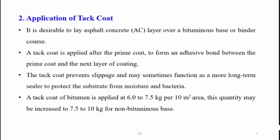The second step is application of tack coat. It is usually desirable to lay an asphalt concrete layer over a bituminous base or binder course. The tack coat is applied over the prime coat so that an adhesive bond is formed between the prime coat and the next layer. The tack coat prevents slippage and also functions as a long-term sealer to protect the substrata from moisture and bacteria. The base coat of bitumen is applied at a rate of 6 to 7.5 kg per 10 square meters, increased to 7.5 to 10 kg for a non-bituminous base.